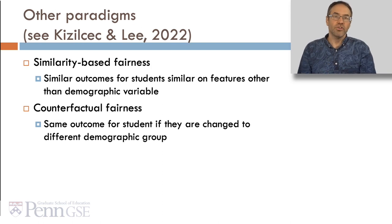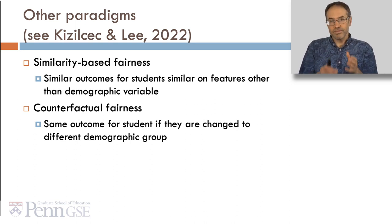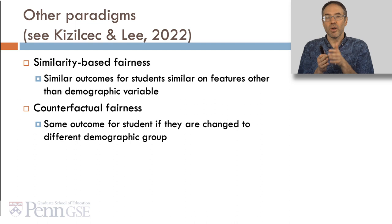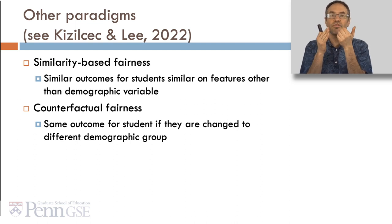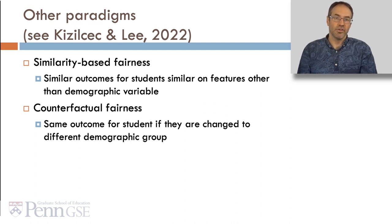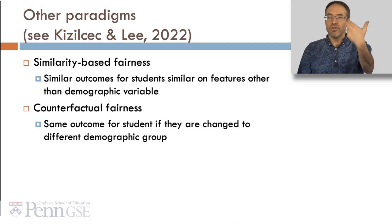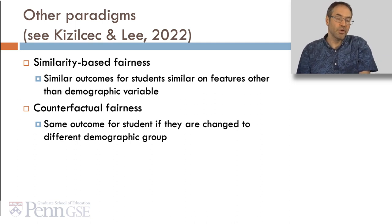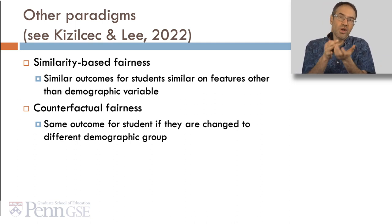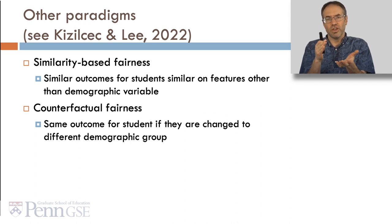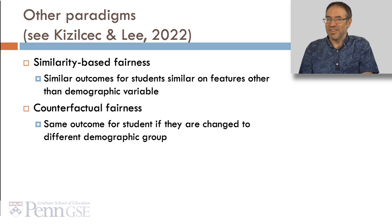Other paradigms — for a fuller discussion see Kizilchek and Lee — include similarity-based fairness, where you look for similar outcomes for students who are similar on features other than the demographic variable, and counterfactual fairness, where you look to see whether you would get the same outcome for a student if they were changed to a different demographic group. Counterfactual fairness typically applies when you're actually using a demographic variable as a predictor, which is not something I'd recommend.